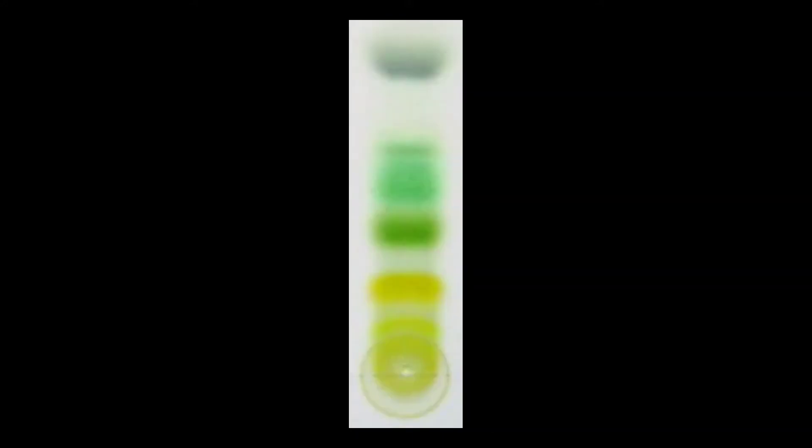In thin layer chromatography, a plate covered with a thin layer of silica is placed into a beaker with a small amount of solvent, which is absorbed up the silica. As the solvent passes over the mixture, the mixture is separated based on how polar each part of that mixture is.